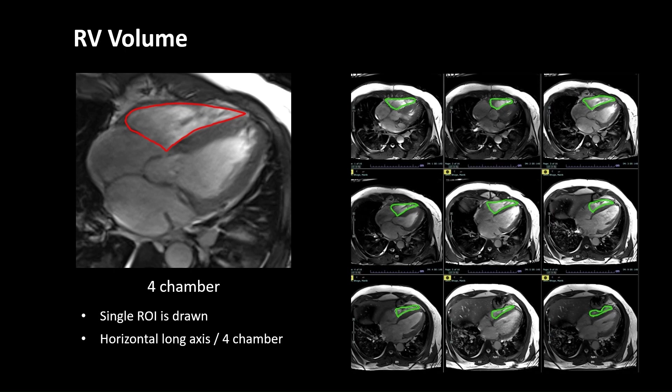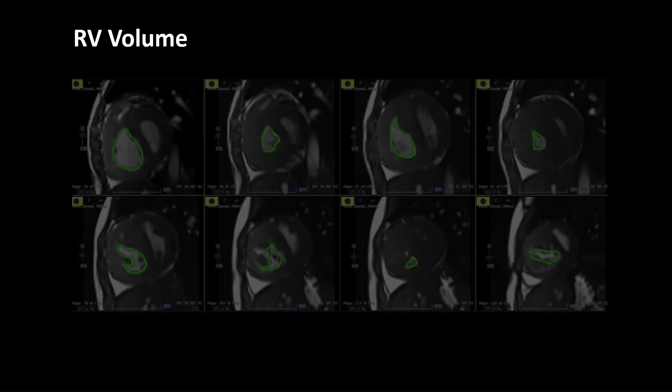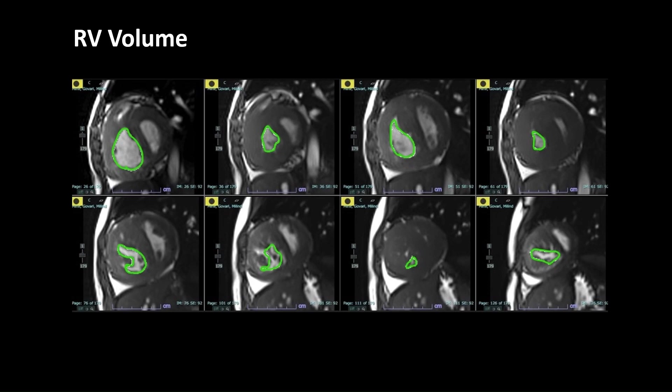For the right ventricle, we usually draw ROI on the four-chamber view. But when RV walls are thickened, it can also be drawn in short axis just like the LV, and if you draw an epicardial ROI, you can also obtain RV mass.